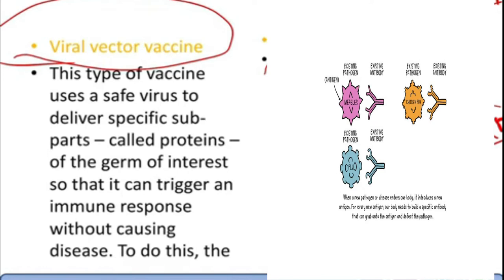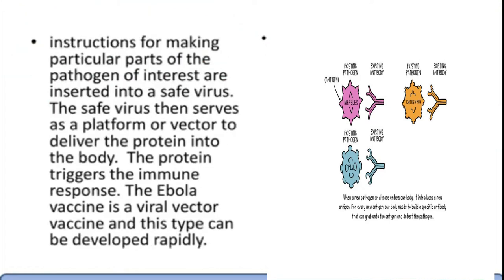In a viral vector vaccine, the actual virus will be injected. This type of vaccine uses a safe virus to deliver specific subparts called proteins of the germ of interest, so that it can trigger an immune response without causing disease. Instructions for making particular parts of the pathogen of interest are inserted into a safe virus. The safe virus then serves as a platform or vector to deliver the protein into the body, triggering the immune system to release antibodies to kill the invading virus.